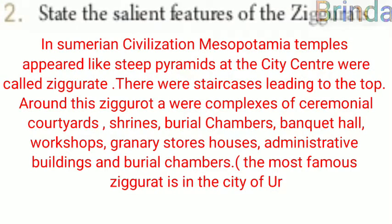Second: state the salient features of ziggurats. In Sumerian civilization in Mesopotamia, temples appeared like steep pyramids at the city center and were called ziggurats. There were staircases leading to the top. Around this ziggurat were complexes of ceremonial courtyards, shrines, burial chambers, banquet halls, workshops, granaries, storehouses, and administrative buildings. The most famous ziggurat is in the city of Ur.